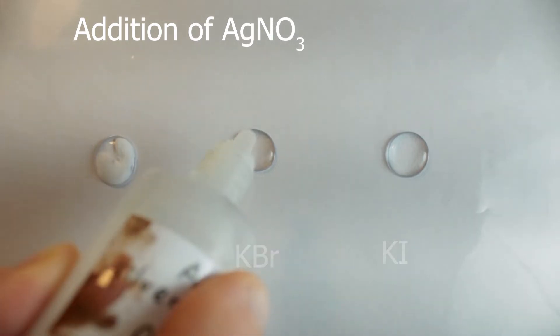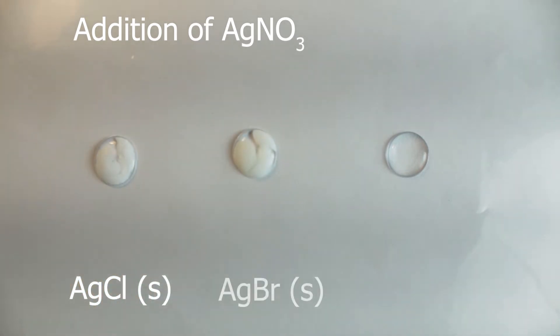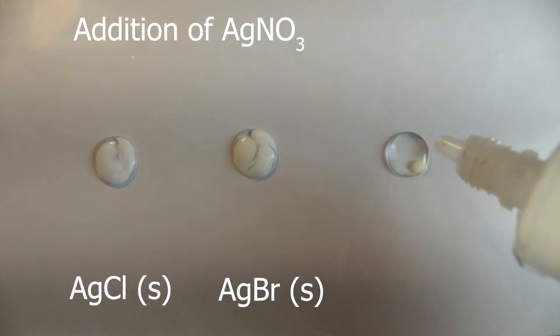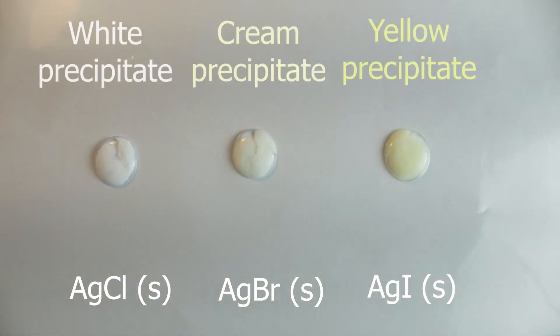On addition of silver nitrate, you can see the precipitates color. Silver chloride white, silver bromide creamy, and silver iodide yellow.